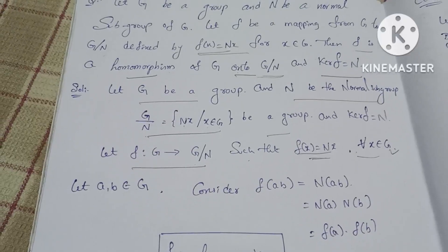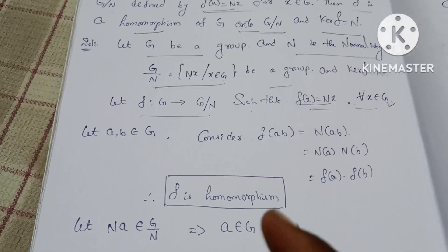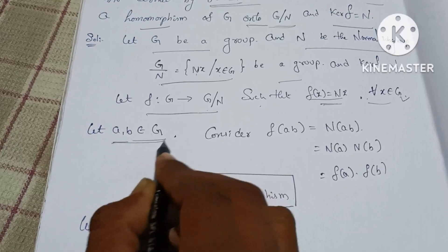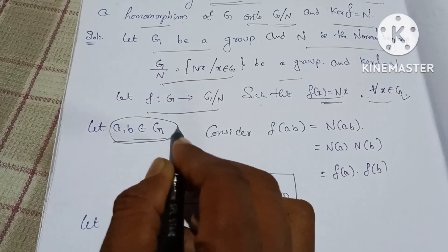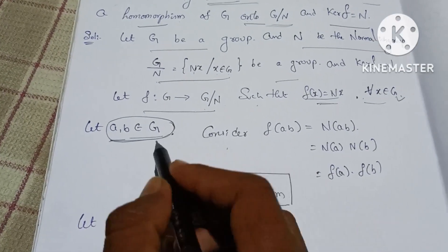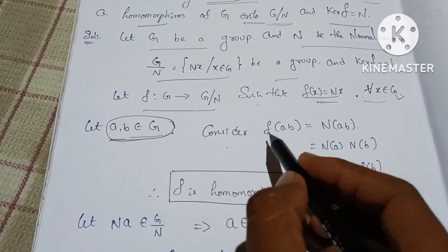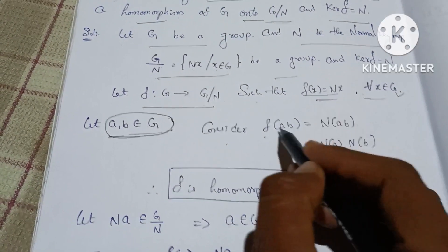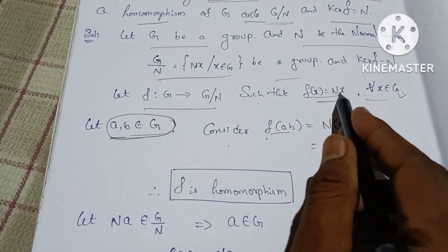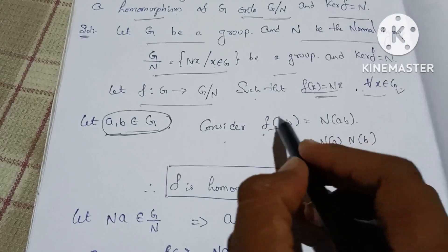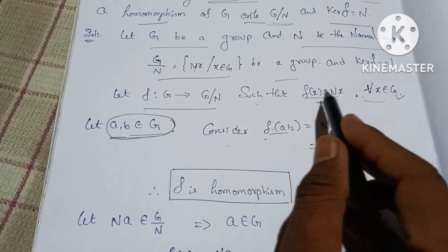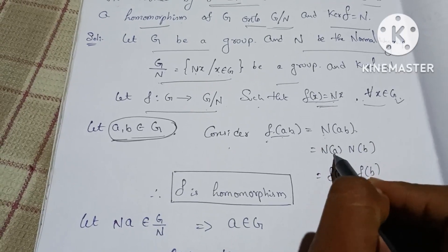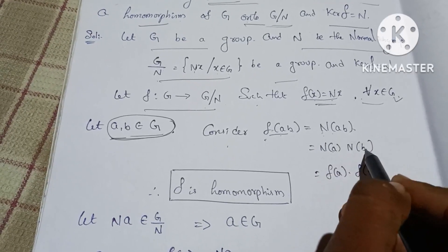First, we prove F is a homomorphism. Let A, B belong to G. Consider F(AB). By the definition of F, F(AB) = N(AB).